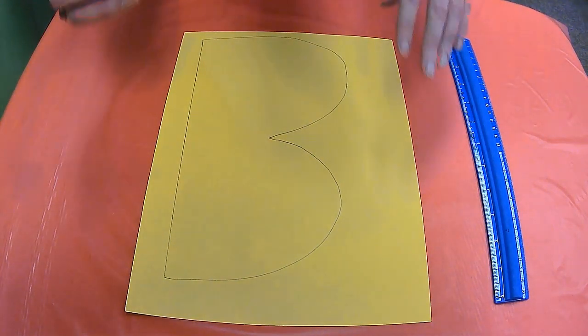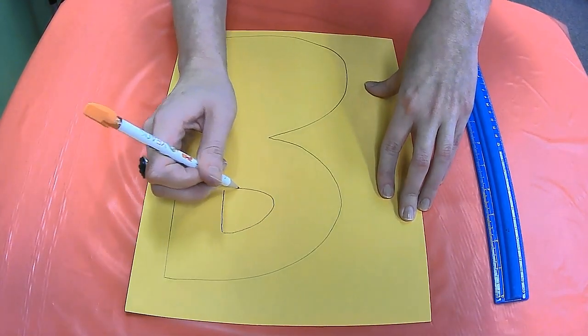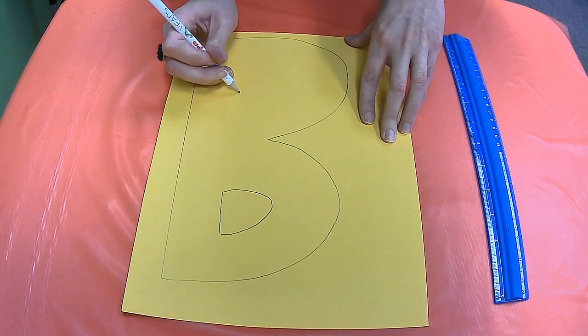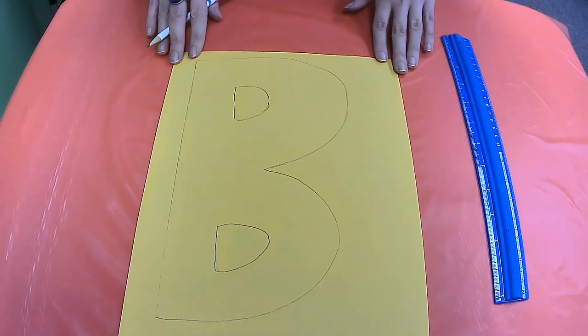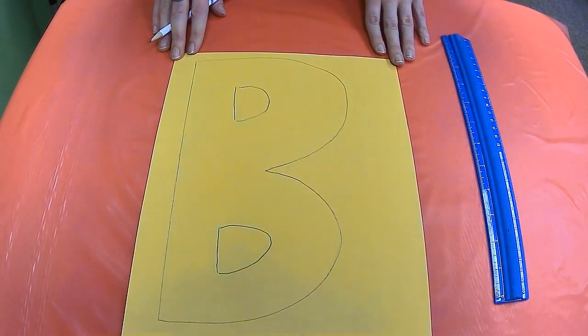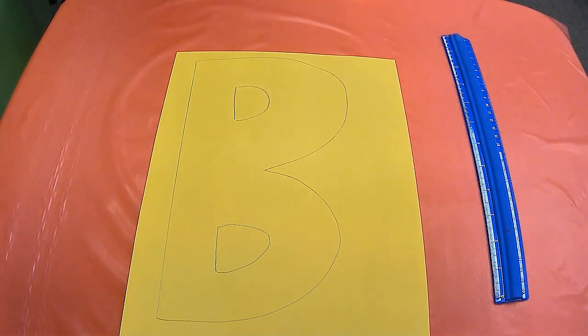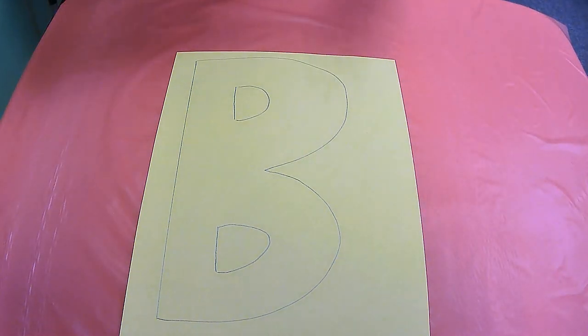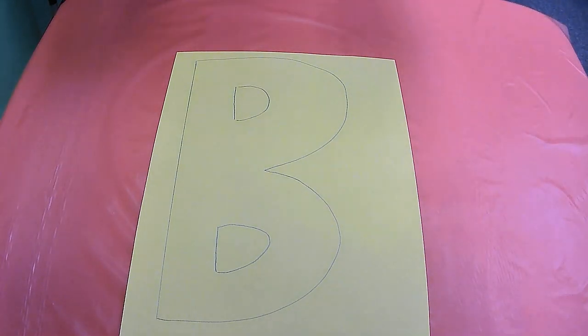The next part to making your Letter B is to make the small holes in the center of these two sections. The next part to making your Letter B, Bee, is to use your ruler to make straight lines for the stripes. You don't have to use a ruler to make straight lines, but it's really good practice for using a ruler.